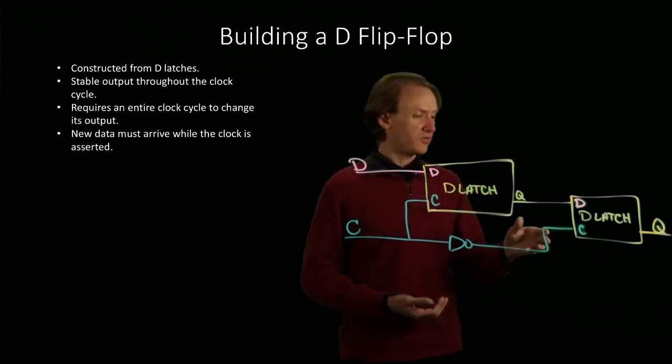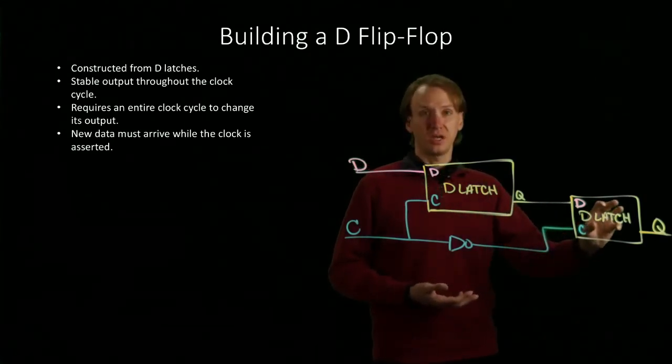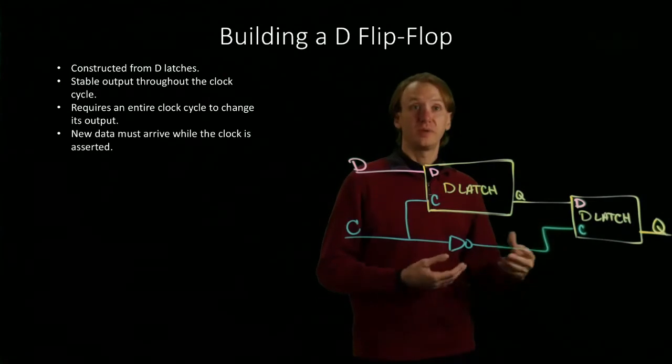Then we get to the second half of our clock cycle. Our clock signal is low. This D latch can update and begin pushing out the new piece of data.